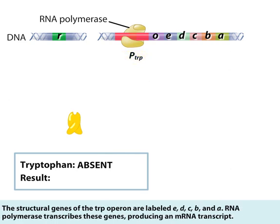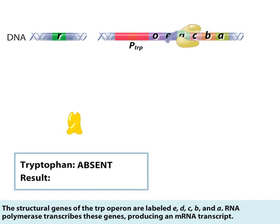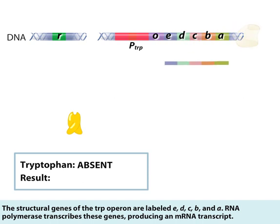The structural genes of the TRP operon are labeled E, D, C, B, and A. RNA polymerase transcribes these genes, producing an mRNA transcript.